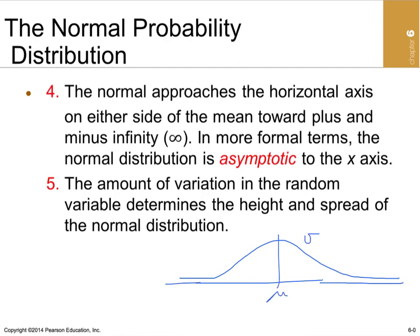Technically, the random variable X can range from negative infinity to positive infinity, though for most practical distributions that range is not realistic — we cannot have infinite or negative salaries. Salaries run from zero to a very large number. Within that range, this is a continuous distribution. The amount of variation in the random variable determines the height and spread: distributions with low variability tend to be narrow and tall, while those with high variability are shorter and fatter with more spread.